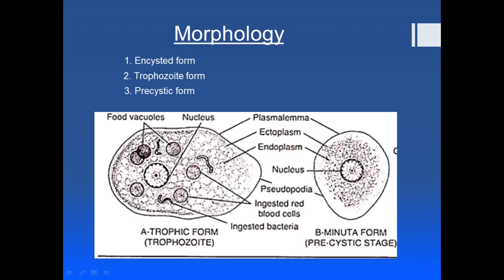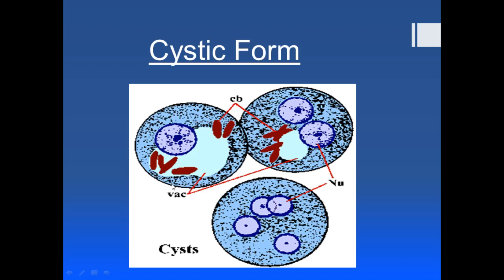Now let's see the cystic form. In the early cystic form, you can see the cyst wall has been secreted around it. Moreover, there is a glycogen mass — you can see this vacuole-shaped structure. You will also see chromidial bars, which are actually RNA complexes stained darkly. The nucleus shows the typical arrangement with chromatin material at the outer periphery and the nucleolus in the center.